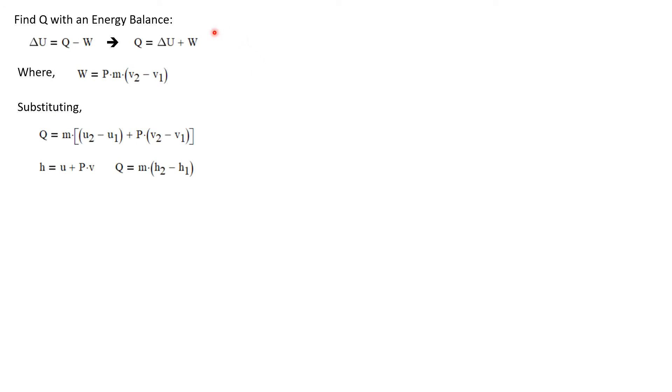Let's find the heat transfer with an energy balance. Our energy balance for a closed system is that delta U is just Q minus W. Let's rearrange and solve for Q. Q is just delta U plus W. For a constant pressure process, the work is just the pressure at which the process takes place times the mass times the change in specific volume. So we can substitute this term for work, and also we can expand our delta U term.